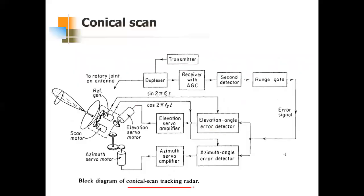This is the block diagram of conical scan tracking. You can see certain motors here. This is the scan motor — the same motor is used as a reference generator for getting the angle errors. The transmitter section is connected to the rotary joint of the antenna. The typical rotation speed is 30 revolutions per second for this conical scan antenna. The same motor that provides the conical scan rotation of the antenna beam also drives a two-phase reference generator, where the electrical outputs at conical scan frequency FS are 90 degrees apart — sin(2π·FS·t) and cos(2π·FS·t). These two outputs serve as the reference signals to extract the elevation and azimuth errors.